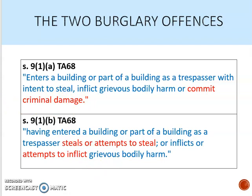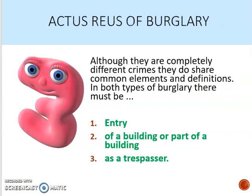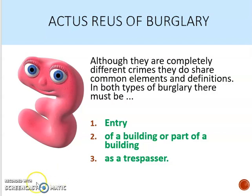Although we have two different burglary offences, the actus reus of both is the same, so that's what we'll look at first. Whether it's a 9-1-A or a 9-1-B, we must have entry of a building as a trespasser. Whenever you're applying the law on burglary, always talk about the actus reus, check you've got these three elements, and then work out whether it's a 9-1-A or a 9-1-B after you've done that.